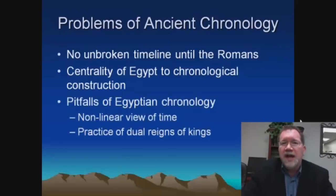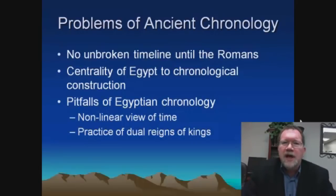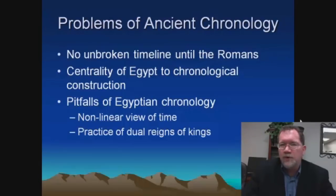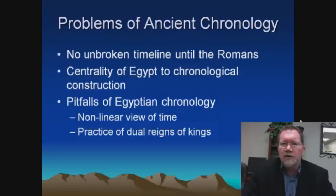When we try to construct a timeline for Egypt, we run into the fact that the Egyptians, particularly early on in their history, did not view the passage of time necessarily in the same way that we do today. They had a cyclical view of time, which was common to many ancient cultures — they believed time moved in circles rather than in a straight line — and that affected the way they kept their records.